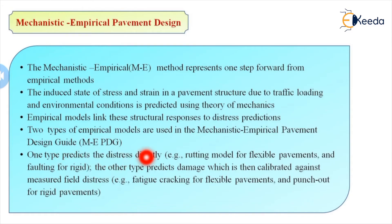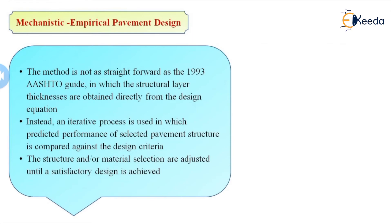One type of model predicts distress directly — that is, a rutting model for flexible pavement and faulting for rigid pavement. For flexible pavement, rutting is considered the major distress; for rigid pavement, faulting of the joints is the major distress. Another type predicts damage which is calibrated against measured field distress — for example, fatigue cracking for flexible pavement and punch out for rigid pavement. The method is not as straightforward as the 1993 AASHTO guide, in which structural layer thicknesses are obtained directly from purely empirical design equations.